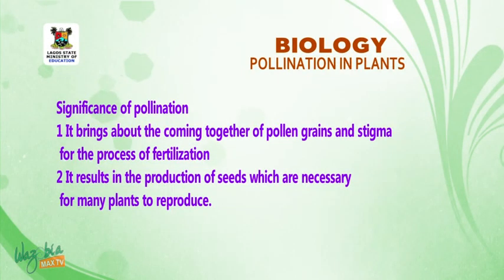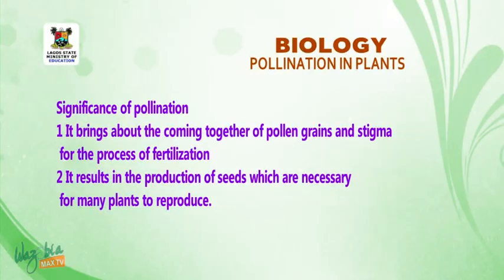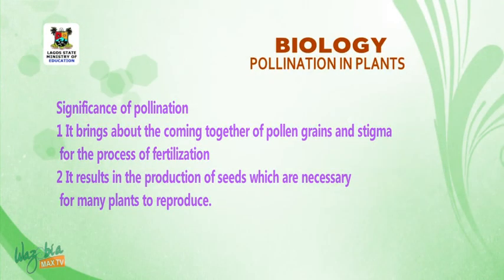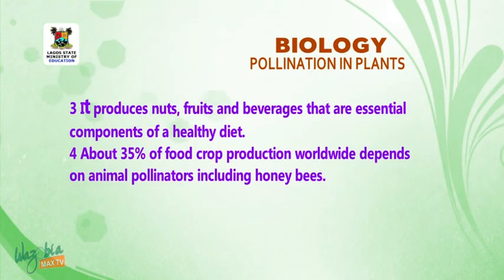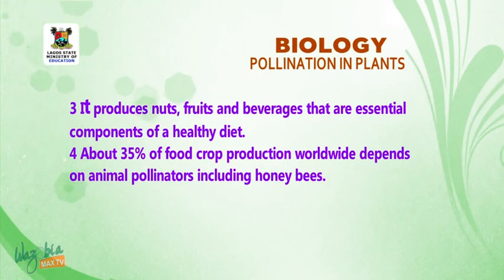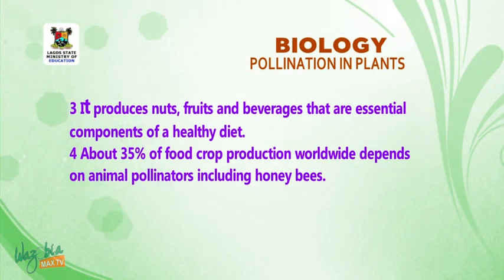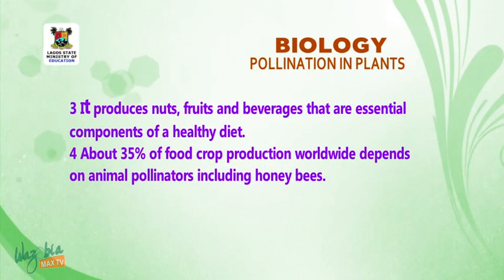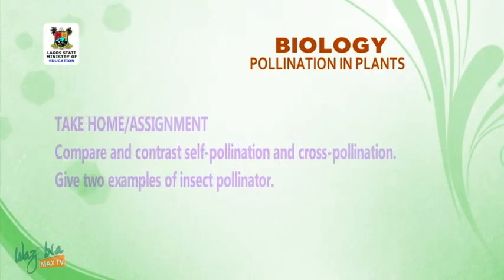2. It results in the production of seeds, which are necessary for many plants to reproduce. 3. It produces nuts, fruits, and beverages that are essential components of a healthy diet. About 35% of food crop production worldwide depends on animal pollinators, including honeybees.